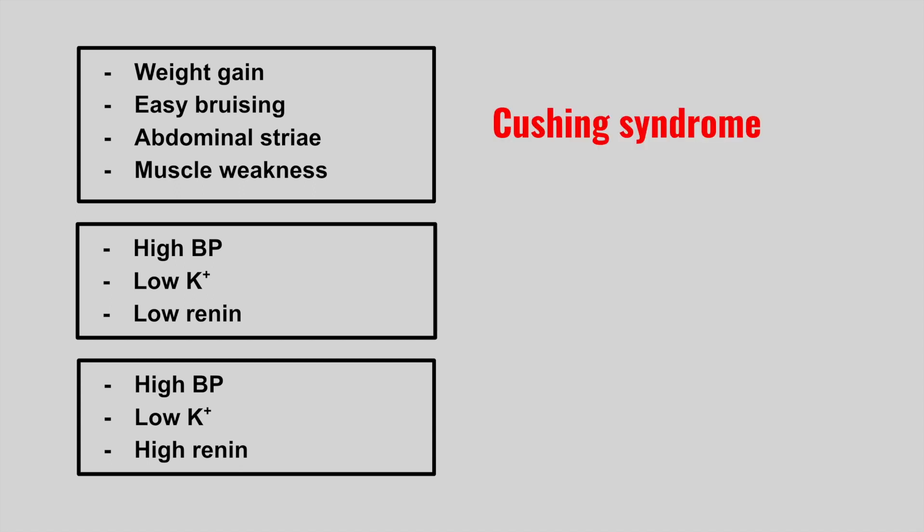The next patient has weight gain, easy bruising, abdominal striae, and muscle weakness. This is Cushing's syndrome. Remember, the patients are going to have a high cortisol level.